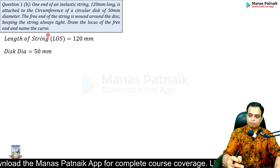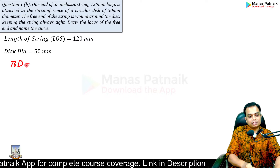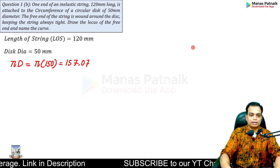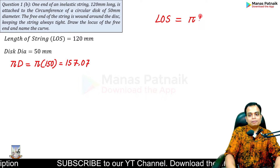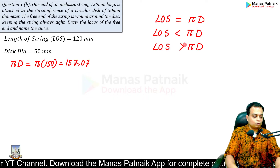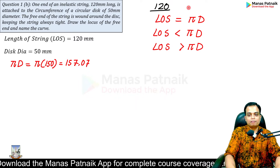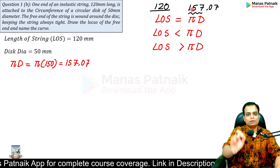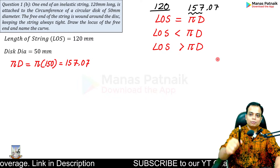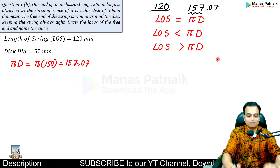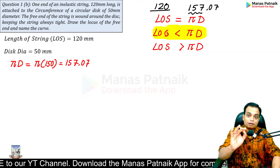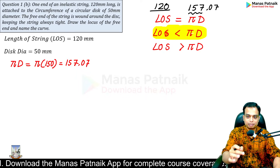Whenever you solve these questions, please remember to always calculate πd, which in this case is π × 50. The value works out as 157.07. Use a calculator and then compare: whether the length of string is equal to πd, less than πd, or greater than πd. In our case the length of string is 120 whereas πd is 157.07. For construction use 157 only — you cannot mark 0.07 accurately on a scale. So in our case, the length of string is less than the circumference πd.